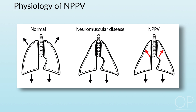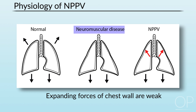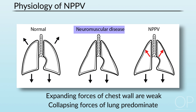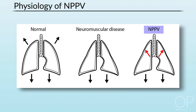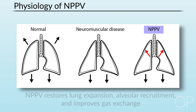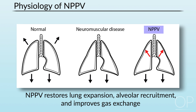In patients with neuromuscular disease, the expanding forces of the chest wall are quite weak due to neuromuscular weakness, and therefore the collapsing forces of the lungs predominate. By instituting non-invasive positive pressure ventilation, you can restore lung expansion, alveolar recruitment, and improve gas exchange.